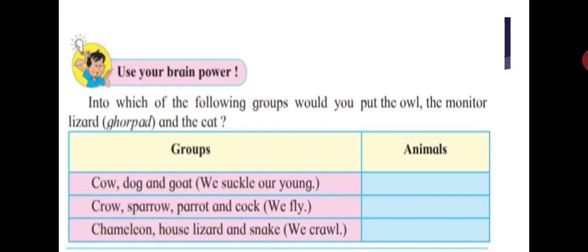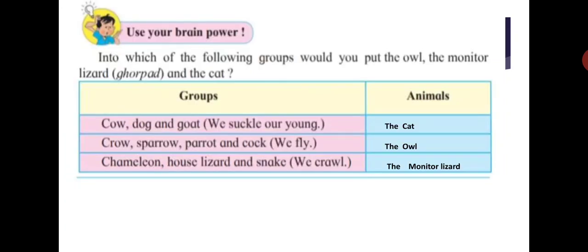Now let's use your brains. Into which of the following groups would you put the owl, the monitor lizard, and the cat? Start thinking. Let's see whether you are correct. We have written the cat in the group of cow, dog, and goat because the cat suckles its young ones like the cow, dog, and goat. We have written the owl in the group of crow, sparrow, and parrot because the owl can fly like these birds. The monitor lizard we have written in the chameleons, house lizards, and snakes group because it can crawl.